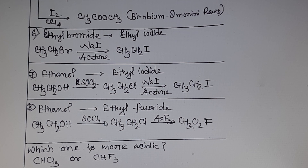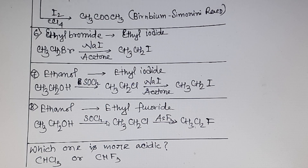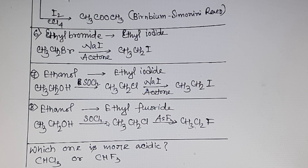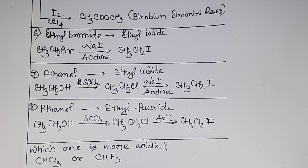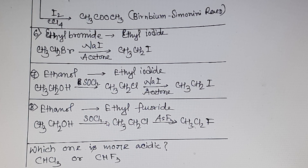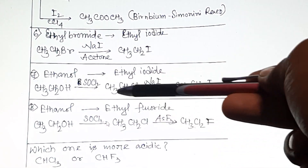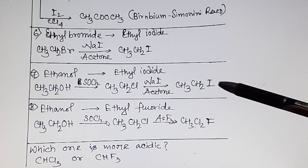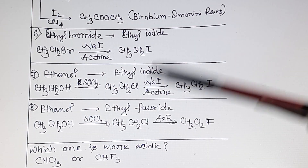Problem 7: ethanol to ethyl iodide. Please try on your own first before looking at the solution. You can use thionyl chloride (SOCl₂), PCl₅, PCl₃, or NaI to prepare the haloalkane from ethanol. Ethanol reacts with SOCl₂ to form ethyl chloride, and then we apply the Finkelstein reaction to form ethyl iodide.